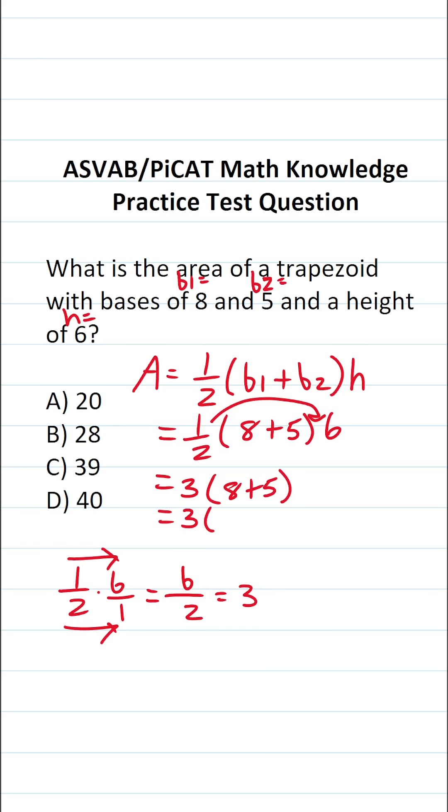So this becomes 3 times 8 plus 5 is 13. And if you can't do this part mentally as well, do it off to the side. Again, on test day, I'd be working a lot of things off to the side so as not to make a mistake. 3 times 3 is 9, 1 times 3 is 3. So the area of this trapezoid is 39C.